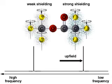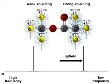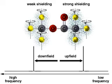Weakly shielded hydrogens, which have higher resonance frequencies, appear on the left, called downfield.